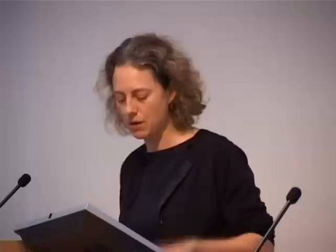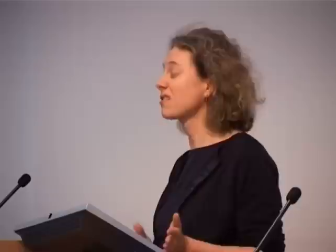A proviso: Roger Reeves and colleagues in a 2004 paper pointed out that for at least the features they've looked at, there is not a simple one-to-one relationship between a single gene on chromosome 21 and specific aspects of the syndrome. For some aspects there will be a simple relationship, for some there won't. This mouse is also important as proof of principle for other chromosomal abnormalities, of which there are many. Trisomy 21 is very important in terms of numbers of live births, and chromosome abnormalities account for at least 5% of all clinically recognized conceptions — and we don't actually know why having an abnormal chromosome number is so deleterious.